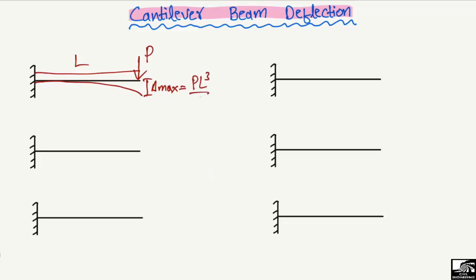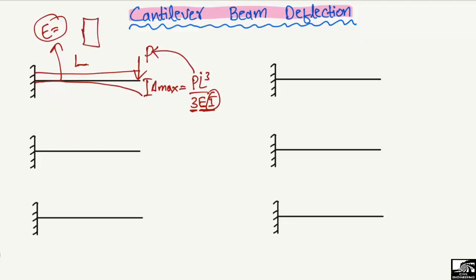The maximum deflection delta is given by the formula PL³ divided by 3EI, where P is the magnitude of the point load, L is the total length of the cantilever beam, and EI is the stiffness of the beam. E is the modulus of elasticity of the material — for example, concrete, steel, or aluminium — and I is the moment of inertia of the beam section, which depends on the cross-section shape, for example BH³/12 for a rectangular section.